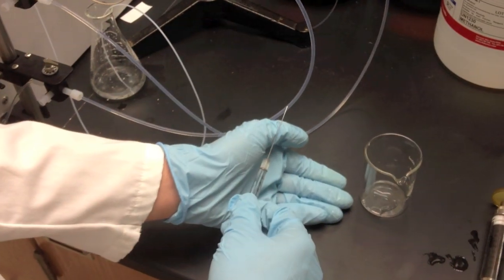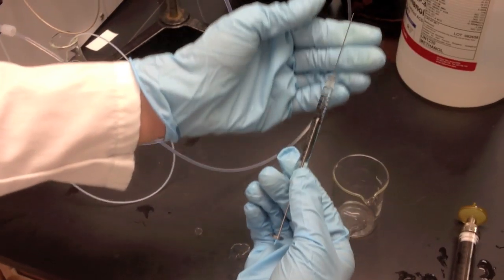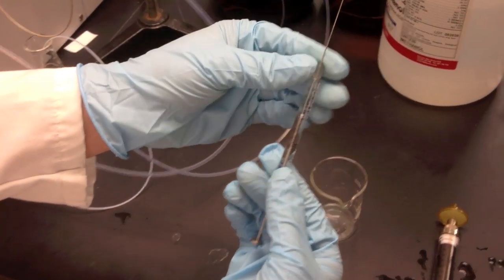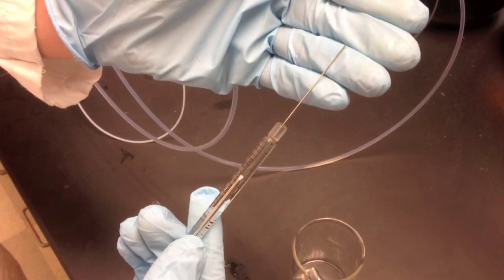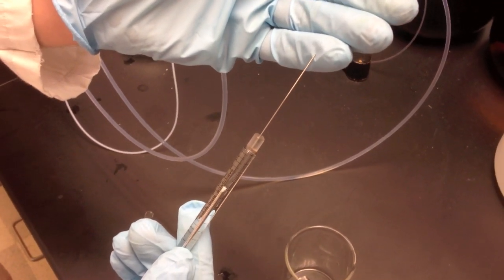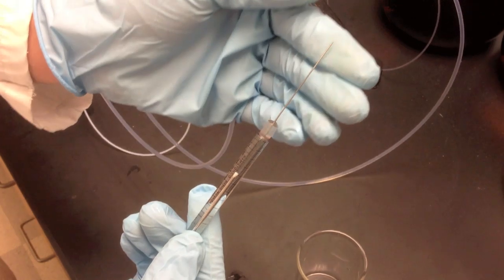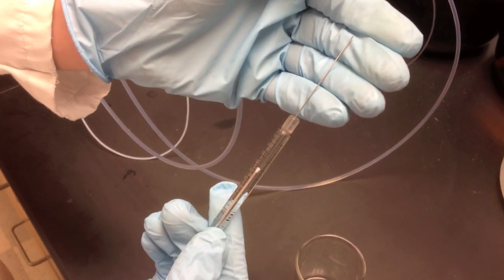So once we have our filtered sample, we're going to draw it up into a blunt syringe, approximately 40 microliters. Make sure it's a blunt syringe and not the GC syringe, which is actually a serrated blade. So while that's all done, we're now going to shoot it onto the machine.